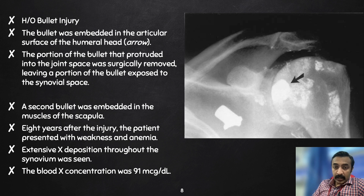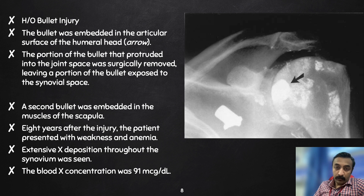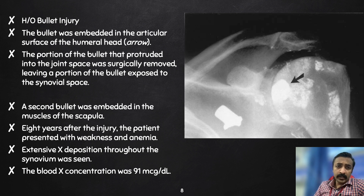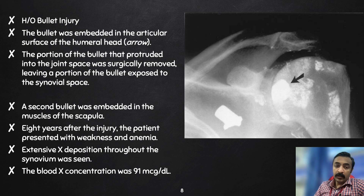What you see here is an X-ray of a person who had a bullet wound. The bullet was embedded in the articular surface of the humeral head, and the portion protruding into the joint space was surgically removed, leaving part of the bullet exposed in the synovial space. A second bullet was embedded in the muscles of the scapula. Eight years after the injury, the patient represented with weakness and anemia. Extensive lead deposition throughout the synovium was seen, and the blood lead concentration was 91 mcg per deciliter.